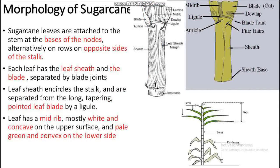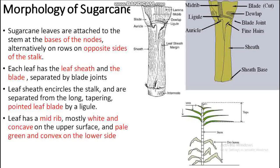Sugarcane leaves are attached to the stem at the base of the nodes, alternately on opposite sides of the stalk. Each leaf has a leaf sheath and a leaf blade. The leaf sheath encircles the stalk and is separated from the long tapering pointed leaf blade by the ligule. The leaf has a midrib that is mostly white and concave on the upper surface, and pale green and convex on the lower side.